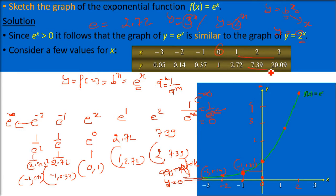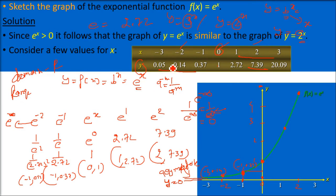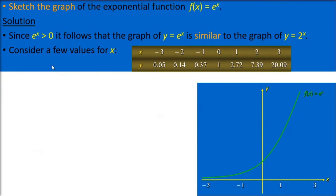For all x-values put into y = e^x, the y-values are always positive. The domain is all real numbers since x has no restriction. The range is (0, infinity) — 0 and infinity not included. This is an increasing function. The asymptote is at y = 0, the x-axis.